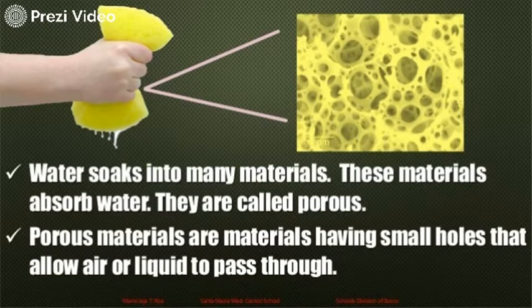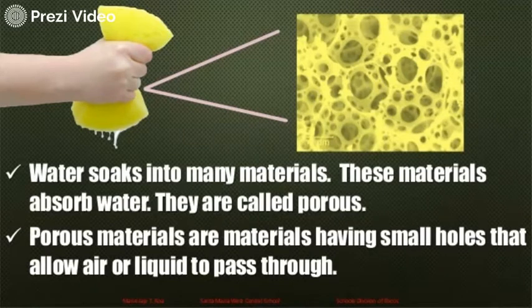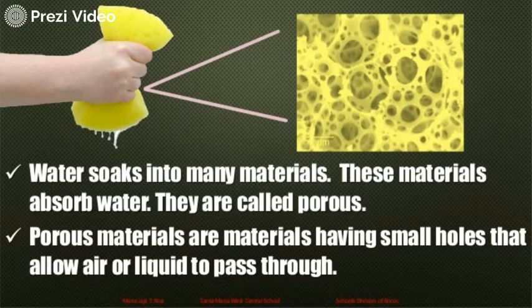Objects that can absorb water are known as porous materials because they have small holes that allow air or liquid to pass through. However, you cannot see these holes with your naked eyes — the holes are too small to be seen.